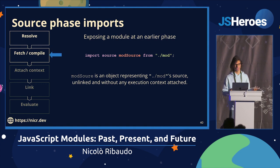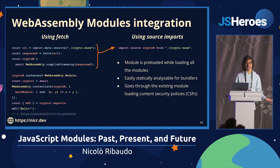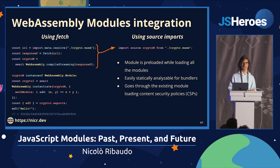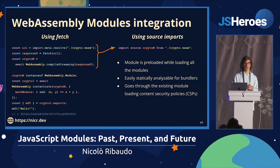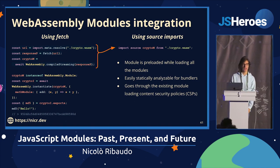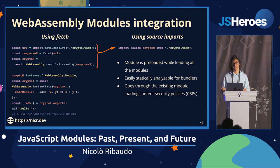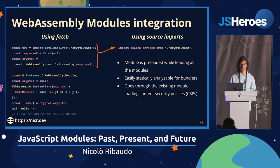Source Phase Imports exposes modules at an earlier step in this process — giving us a representation of the source of a module whose URL has been resolved and that has been fetched and compiled, but not yet linked or evaluated. The main use case is to make it easier to use WebAssembly modules within JavaScript. Right now you need to manually resolve the module URL, fetch and compile the WASM module, then manually link it by providing all dependencies. With this proposal, you can load the WASM module source, which corresponds to the compiled WebAssembly module object, and only handle the linking part.